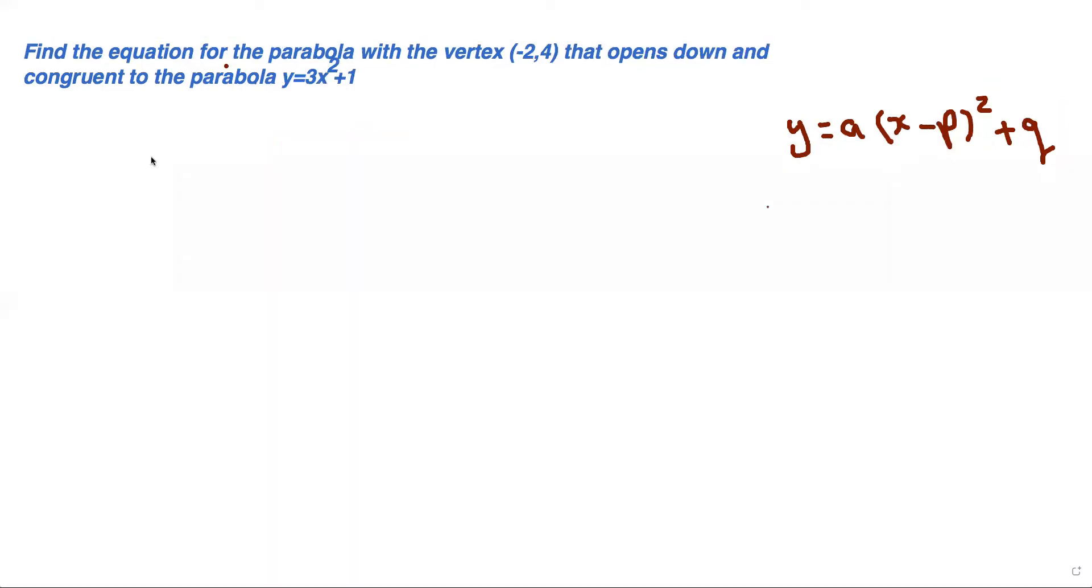Here's another question: find the equation of the parabola with vertex (-2,4) that opens down and is congruent to the parabola y = 3x² + 1.